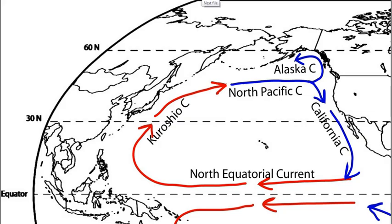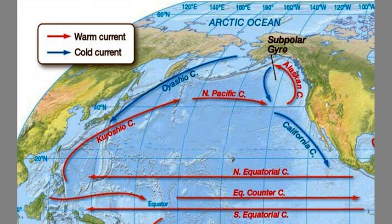You might wonder how we know about the way these currents go, and there are a number of different things we can use to study them. This figure from your book shows the same thing — there's the Alaska current and then the bigger loop of the North Pacific gyre.